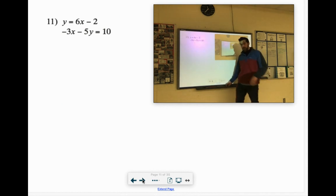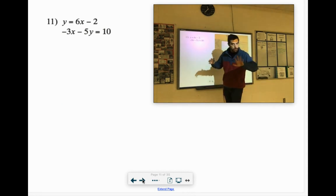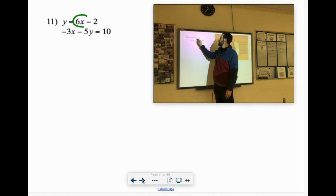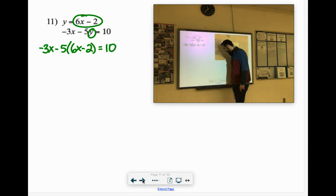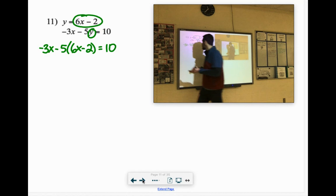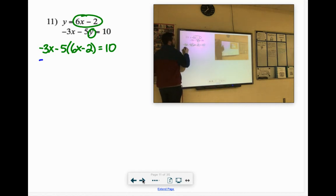11. y equals. Fantastic. We need that. Here's y. Here's where I'm going to substitute it in. Negative 3x minus 5y, and y is 6x minus 2, equals 10. We have some stuff to distribute here. A negative 5. Negative 5 times 6x would be negative 30x. Negative 5 times negative 2 would be positive 10.